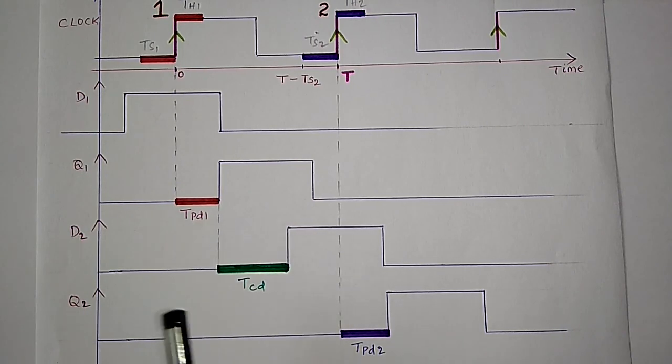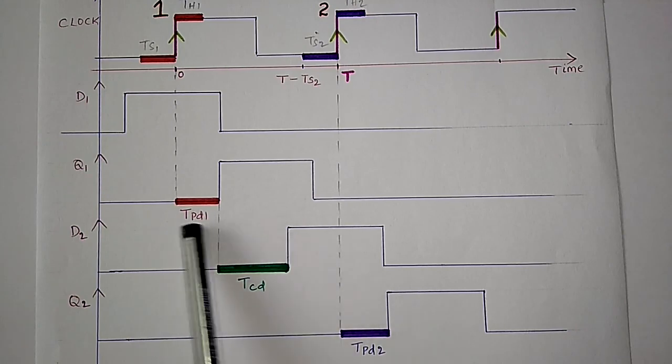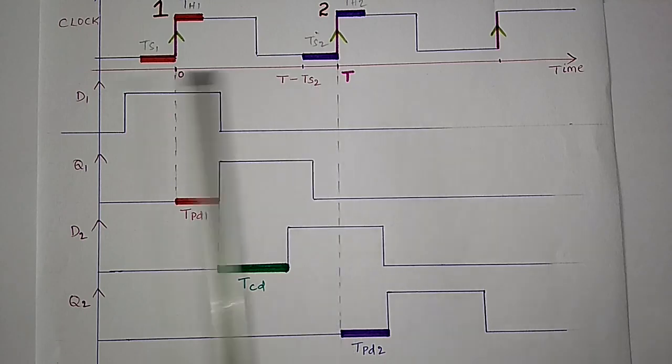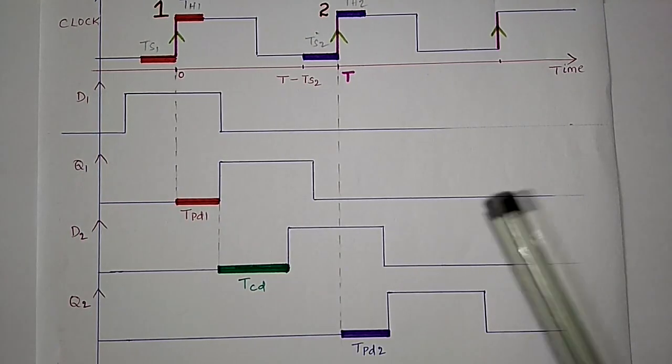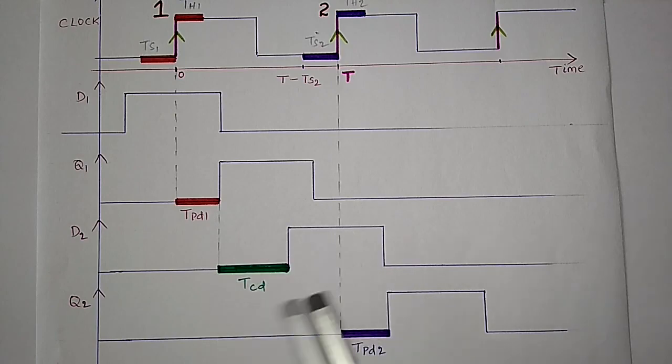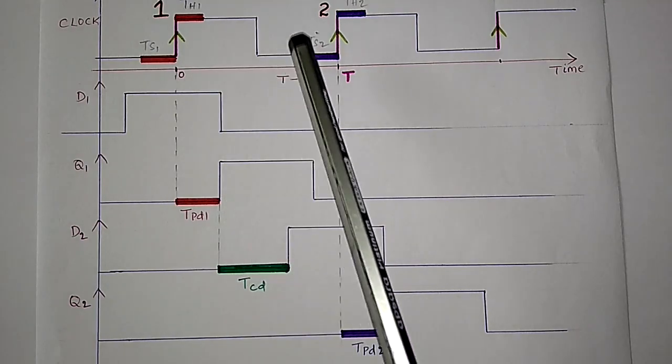So now it is obvious that the maximum of the sum TPD1 plus TCD should be less than the time instant T minus TS2 to avoid setup time violation. Here we have to find the maximum sum for the slowest possible transition to be taken into account. It makes clear that by increasing time period it is possible to fix setup time violation.